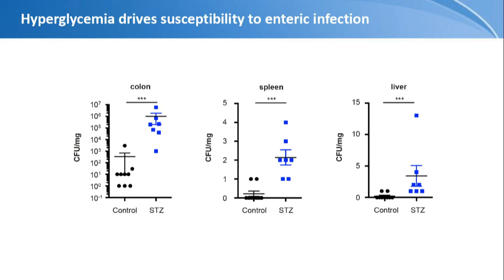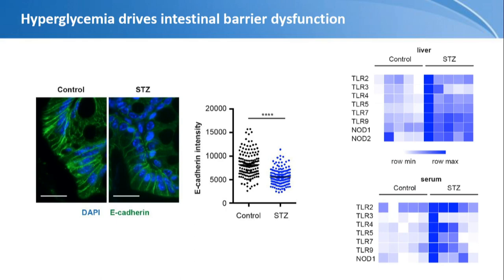Just like the DBDB mouse, streptozotocin-treated mice now show systemic colonization by bacteria in the spleen and liver. They also have massive intestinal barrier problems — we see abrogated levels of occludin, another component that makes the barrier stable. And in the microbial translocation assay, we see very high levels of microbial molecules in the liver and serum of these streptozotocin-treated mice.